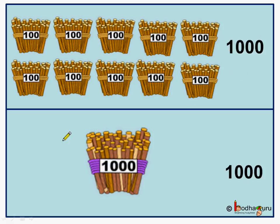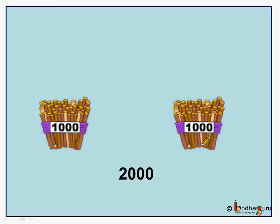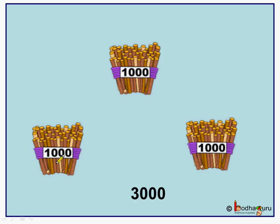Now let us use a bigger bundle of thousand. So this is one thousand — we will be using the bigger bundle of one thousand sticks. One bundle, two bundles of thousand is equal to two thousand. One bundle, two bundles, three bundles — this is equal to three thousand.